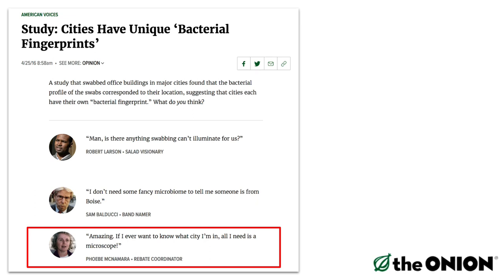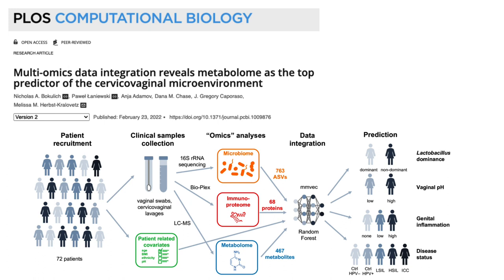Here's another example from my lab — a paper published in February 2022. This was a study collaborating with a group focused on cervical and vaginal cancers, collecting information from patients about the vaginal microenvironment, including microbiome composition, immunoproteome, metabolome (small molecule metabolites present), and patient-related covariates like age, BMI, and ethnicity. We were trying to figure out which of these microbiome feature types — metabolites, microbiome, or immune markers — were most predictive of host phenotype, particularly related to disease.